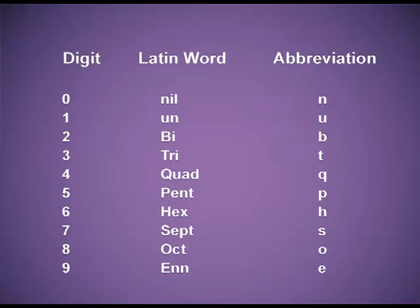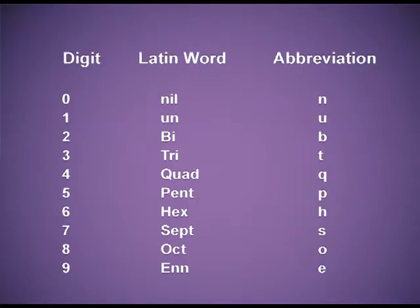For 6, the Latin word is 'hex', abbreviation H. For 7, it is 'sept', abbreviation s. For digit 8, the Latin word is 'oct', abbreviation O. For 9, it is 'enn', abbreviation E. Using these Latin word roots, we will write the IUPAC name for all elements with atomic number more than 100.